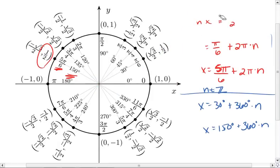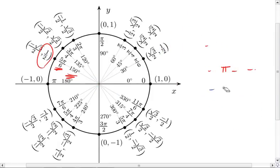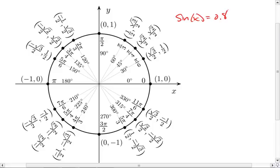But that's only if our answers are on the unit circle. Let's generalize this and make it a little bit easier. Let's say the value was not on our unit circle — such as solving for sine of x equal to 0.8. We can move sine to the other side by taking sine inverse, so we're saying that x equals sine inverse of 0.8. We plug this value into our calculator — hit second sine, that will give you sine inverse, then 0.8.